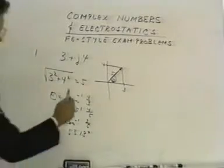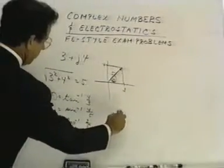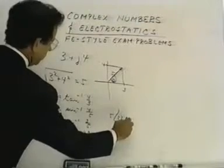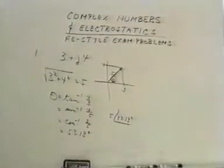So the answer is 3 plus J4 is equal to 5 at an angle of 53.13 degrees. So our answer would be D, part D.